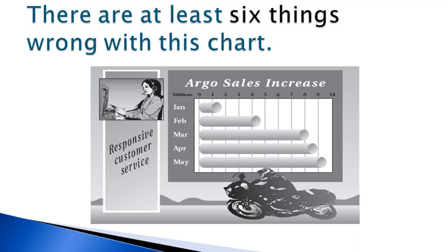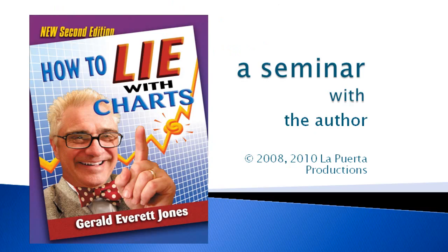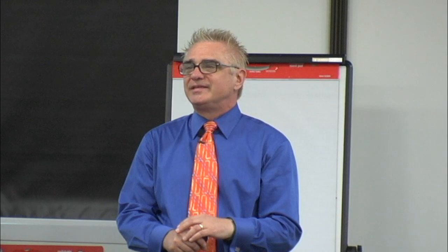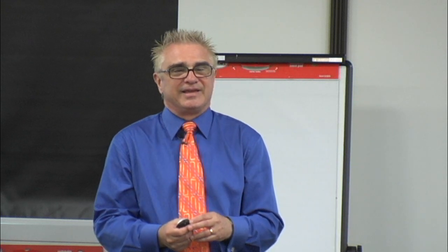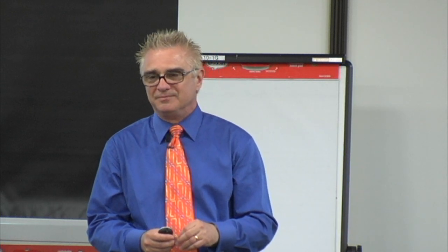So I said there were six things wrong in this chart. Who can name one? Motorcycles going the wrong way. That's right. We get a profoundly negative feeling from the fact that that guy's just going in the wrong direction. Presumably this is a motorcycle company — I guess that's why they would show this. But that guy's like hell bent to nowhere.